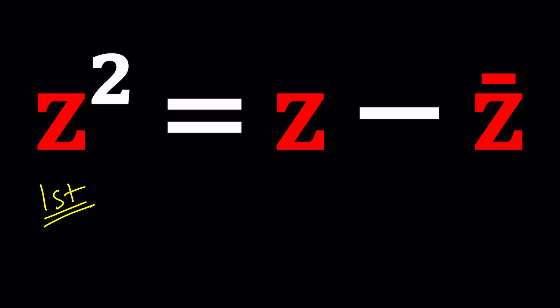For my first method, or attempt, whatever you want to call that, I'm going to go ahead and try the following. Because I have z and z bar in this equation, they're kind of mixed around, I'm going to conjugate both sides. Whenever you have a number like z and w, let's say z plus w, if you conjugate it, this should be equal to z bar plus w bar.